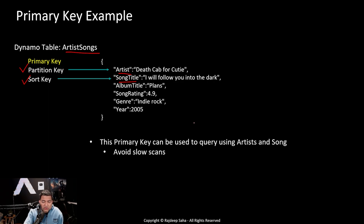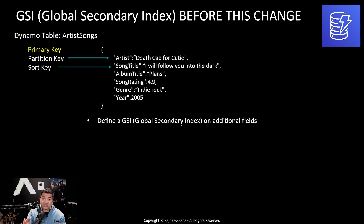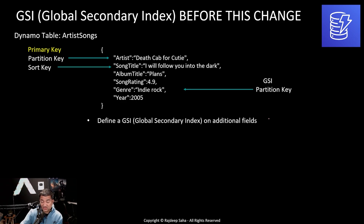Now let's say you have a requirement to find albums based on genre and year. You can't query by the primary key anymore because you can't use artist and song title for this new requirement. So instead of scanning, what if you want to query using genre and year? Before this change, you would define a GSI — a global secondary index — on additional fields. The same rule applies: a GSI has a partition key and a sort key. You can create a global secondary index where the partition key is genre and the sort key is year. You can create a simple GSI with just a partition key, or a composite GSI by also defining a sort key.